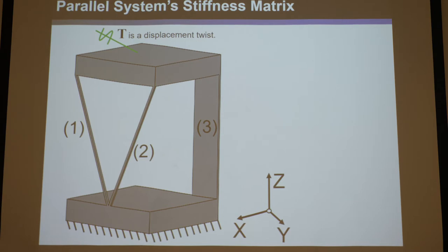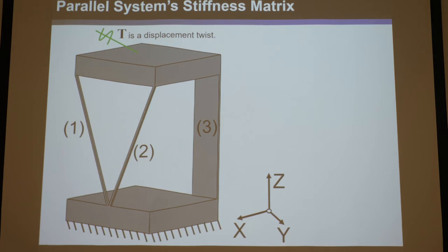Twists are usually given in terms of velocity with omega-x, omega-y, omega-z, vx, vy, vz. But we're talking about displacement twists. From the last lecture, we assume these are traditional velocity twists multiplied by delta-t, some infinitesimal increment of time, so they become delta-theta-x, delta-theta-y, delta-theta-z, delta-dx, delta-dy, delta-dz.